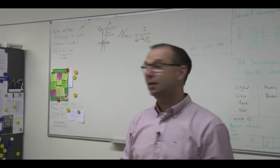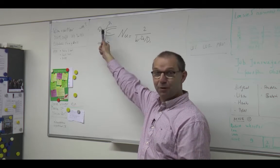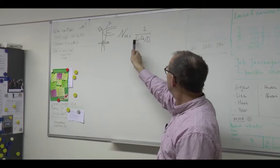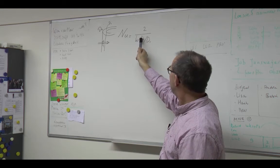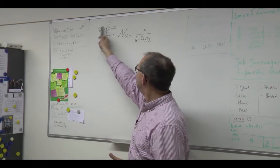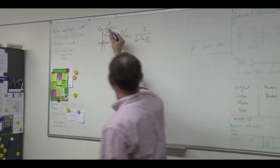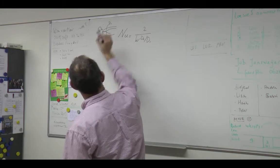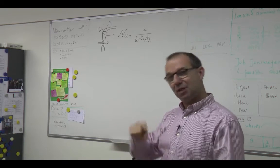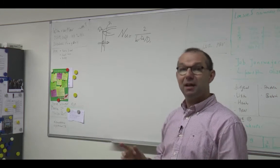We've got a good question about heat transfer through a cylinder wall. This is our Nusselt number: 2 over the natural logarithm of outer diameter over inner diameter. The question was: what will happen if these two become very close to one another so that the thickness between them is small? Then intuitively you would say this has to go back to a flat plate. And can I show that? The answer is yes.